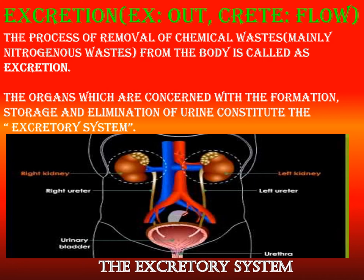The main organs of excretion are the kidneys, as shown in the picture. There is a pair of kidneys in our body, connected to the urinary bladder by the ureters — tubular structures. There is a right ureter and a left ureter, both connected to the urinary bladder. At the base of the urinary bladder there is a short tube called the urethra, through which urine is excreted out of the body.